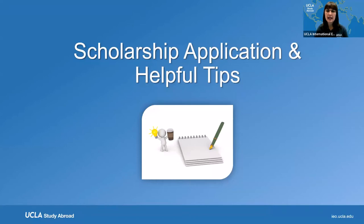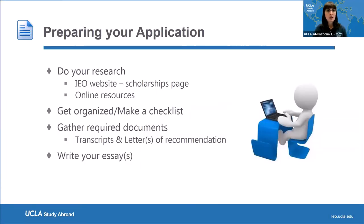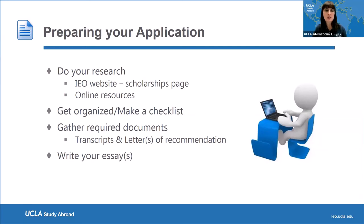Now let's talk about the application process and some helpful tips. Before you start applying, you should do some research. The IEO website would be the best first place to go — it shows main national scholarships and all UCLA scholarships based on your program. When you start doing online research, create a list of your personal unique attributes and include them in your search. For example, you can search 'study abroad scholarships for first generation students' to find scholarships suited to you.